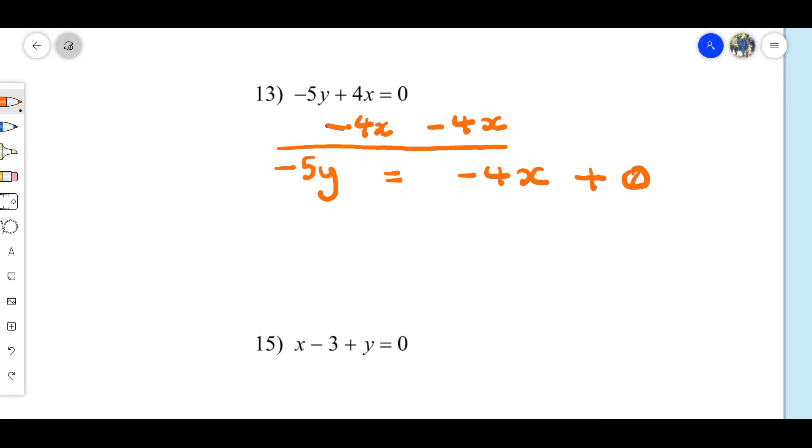And then we're not quite there. We have negative 5y. We need to have y equal mx plus b. So we're going to divide both sides by negative 5. And I'm going to divide each term by negative 5. And then I'm just going to clean that up. So I'm going to have y is equal to 4 over 5x minus 0.